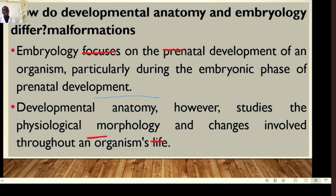Another important branch is developmental anatomy and embryology. We'll look at how malformations and congenital abnormalities normally occur and how they are inherited. Embryology focuses on prenatal development, particularly during the embryonic phase — the first eight weeks. Developmental anatomy looks at the physiological morphology and changes throughout an organism's life: how hands, the heart, and kidneys develop, when the lungs become capable of gaseous exchange, and when the heart starts pumping blood.